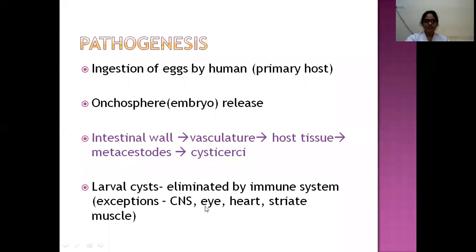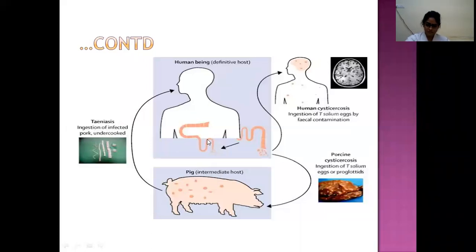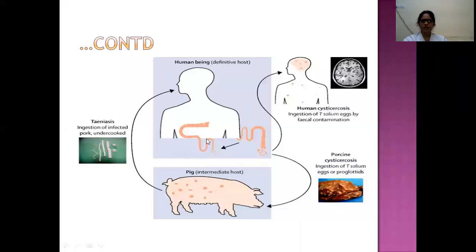Target tissues are the CNS, eyes, heart, and striated muscles. The difference between taeniasis — the presence of the tapeworm within the gastrointestinal tract — and cysticercosis — the presence of larval forms within various tissues — is important. In taeniasis, gravid proglottids are excreted through stools and normally ingested by the secondary host (the pig), which stores the larval forms as cysticerci, later ingested by humans through pork or beef, completing the cycle.